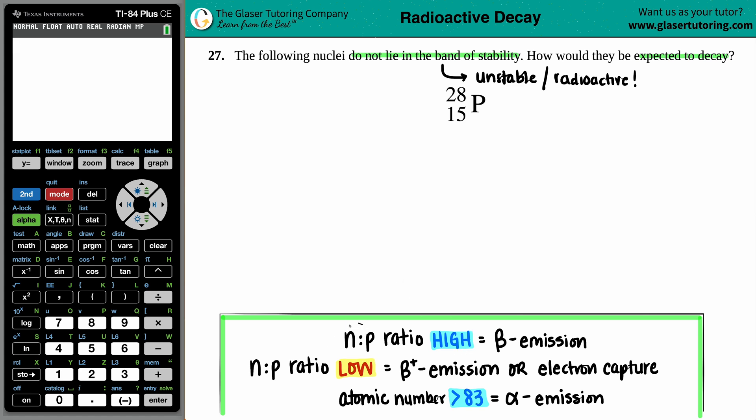But now there's something called the n:p ratio. If you have a high n:p ratio, you'll undergo beta emission. If you have a low n:p ratio, you'll either go positron emission or electron capture.